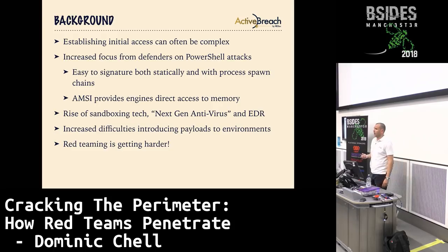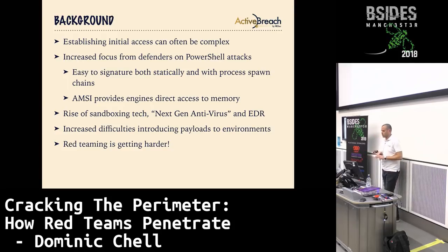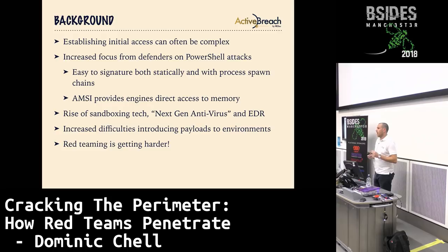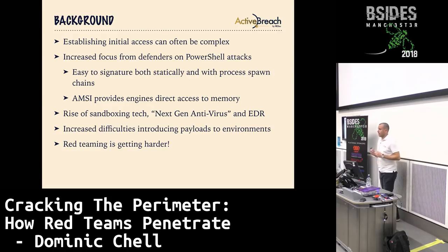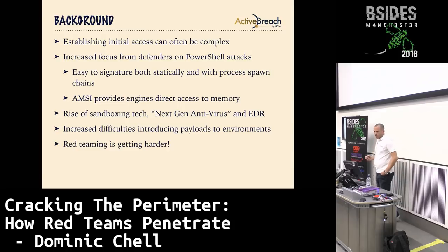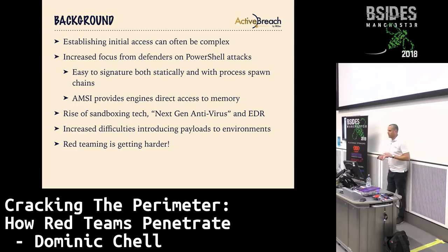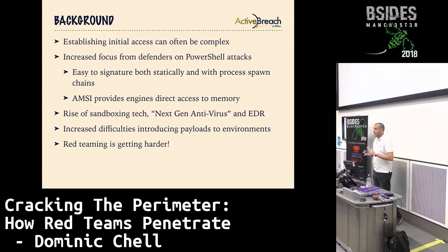Once we get onto the network, things really fly by. There's been quite a lot of research into lateral movement techniques and Active Directory — development of tools like Bloodhound, CrackMapExec, DeathStar — tools which streamline the lateral movement phase. I think there's been less focus on the actual initial access. The only tools I can really think of are Unicorn from TrustedSec and another tool called Starfighters.